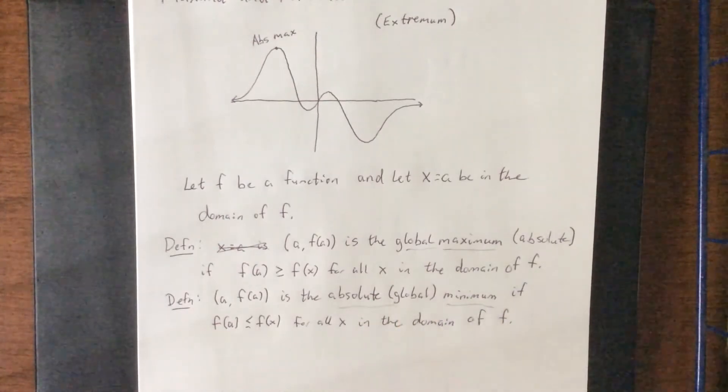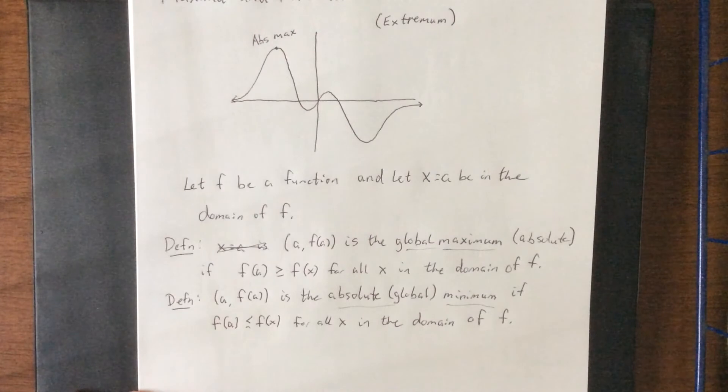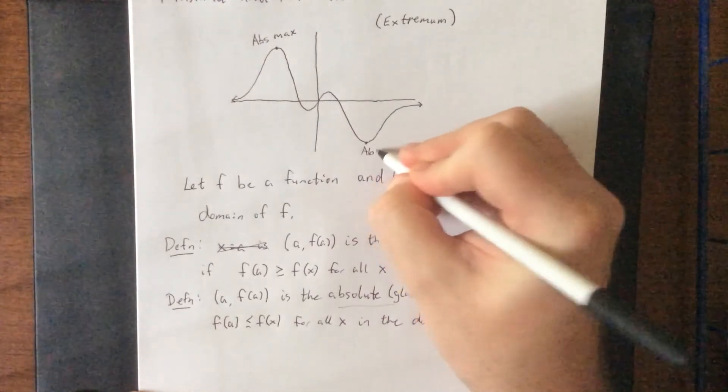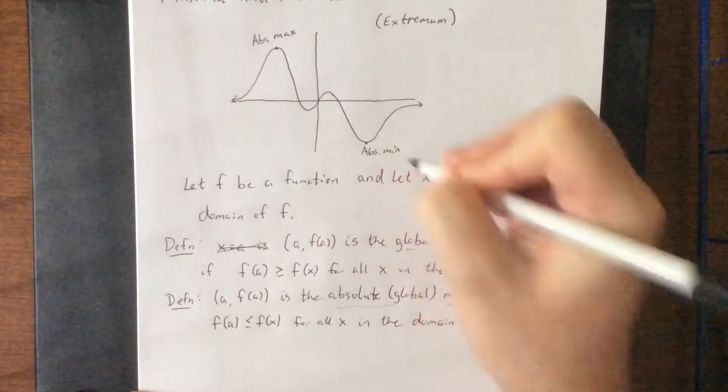So I would refer to our absolute minimum if it is the lowest point on the graph, period, full stop. If it's the lowest point, it is the global minimum. In this case, our absolute minimum or global minimum would be this point right here.